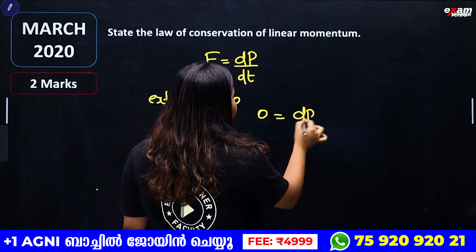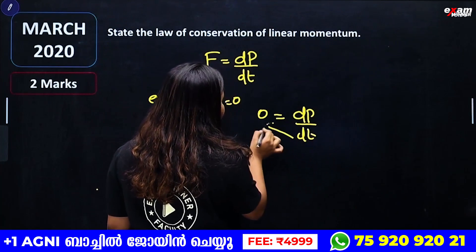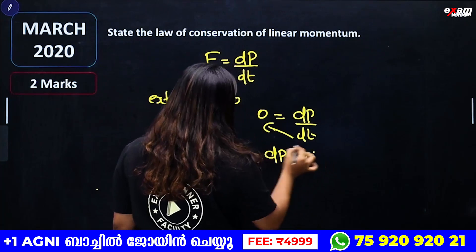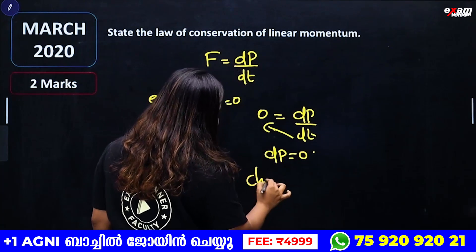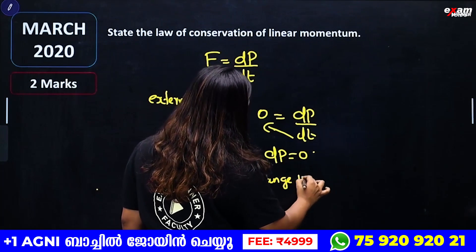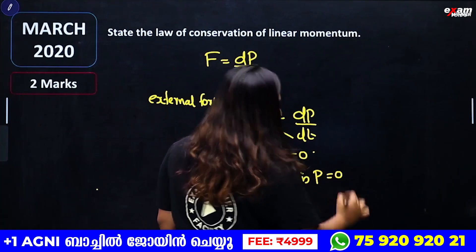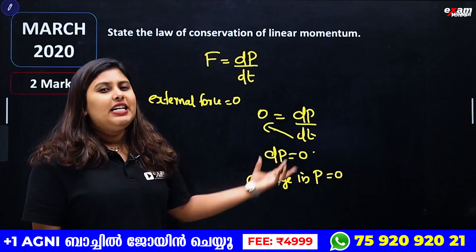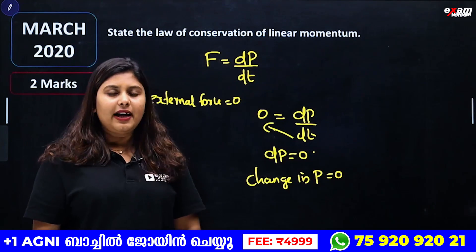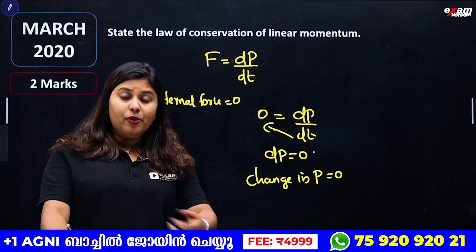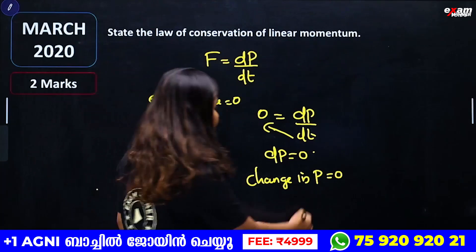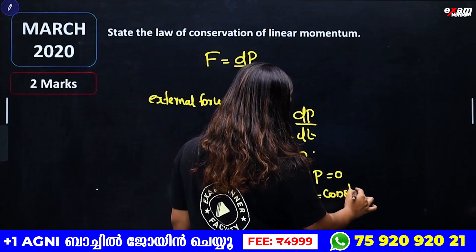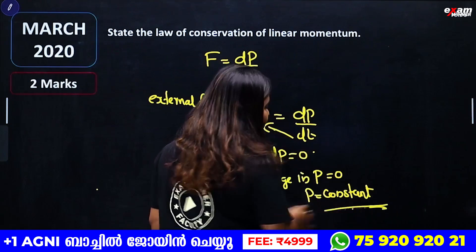If external force is zero, then 0 = dp/dt, which gives dp = 0. Therefore the change in momentum is zero, meaning momentum is constant — this proves the conservation of momentum.